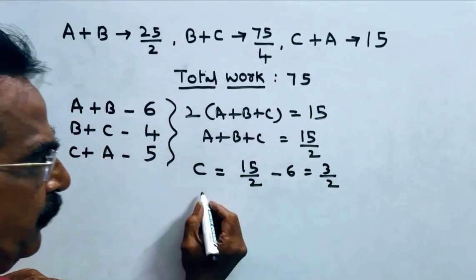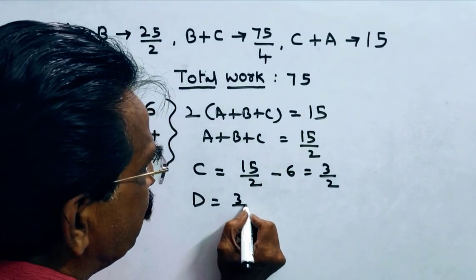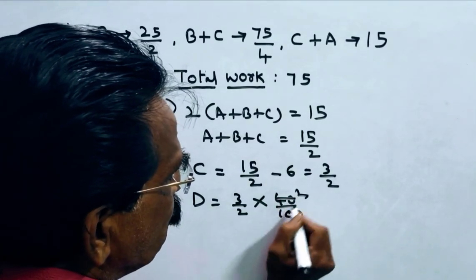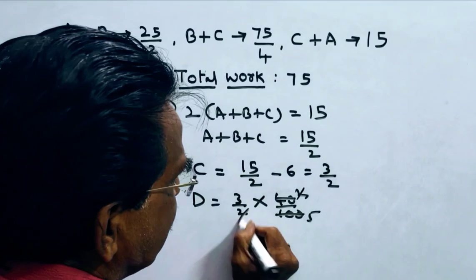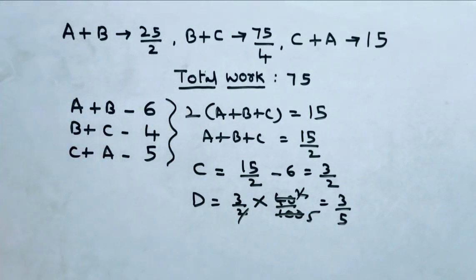Friends, C 3 by 2 units, D 40 percent of C. So 3 by 2 into 40 percent, 40 percent. So 2's, 5's, 2, 2 cancel. So D can do 3 by 5 units of work per day.